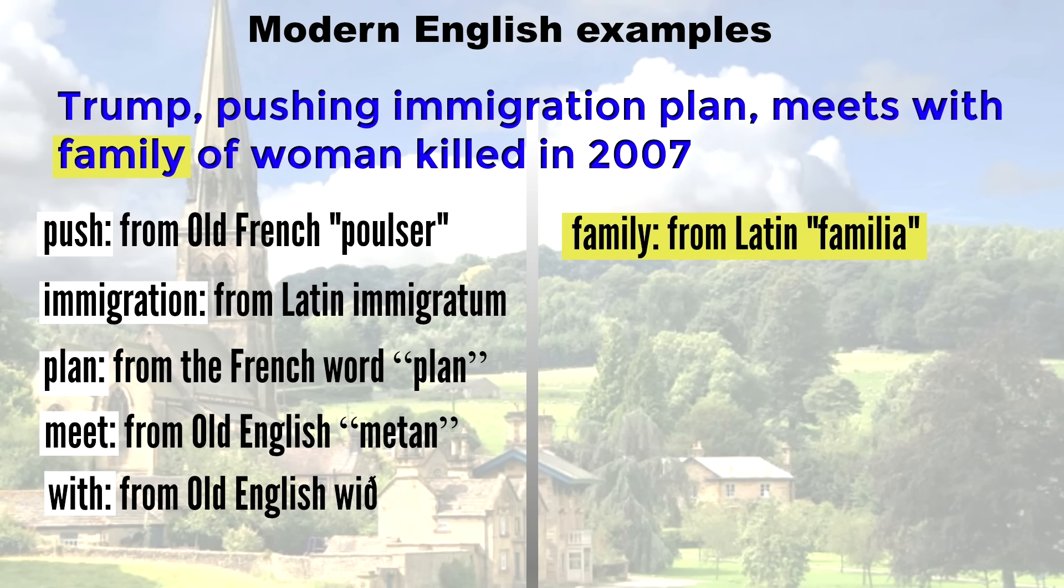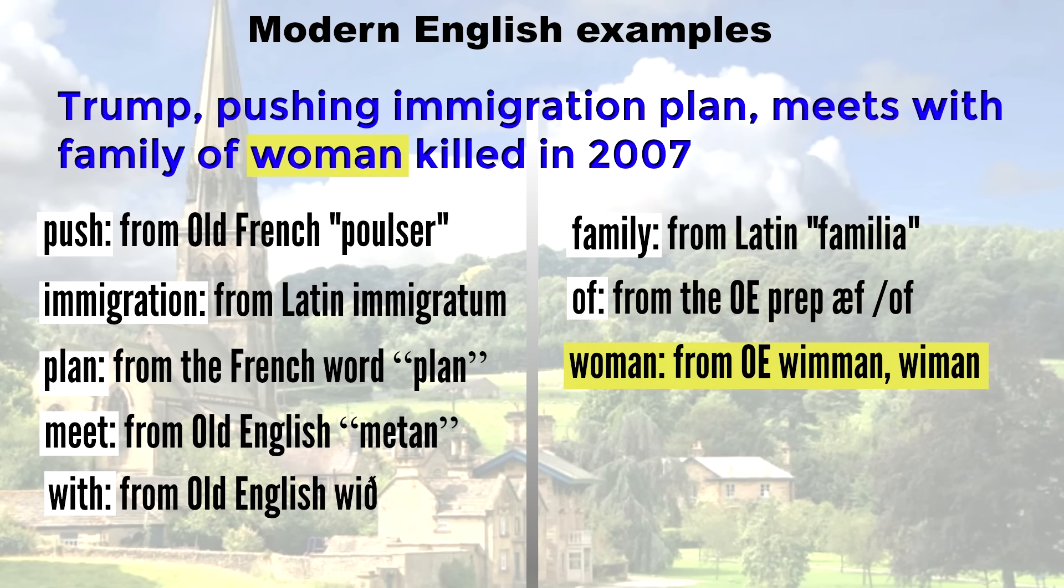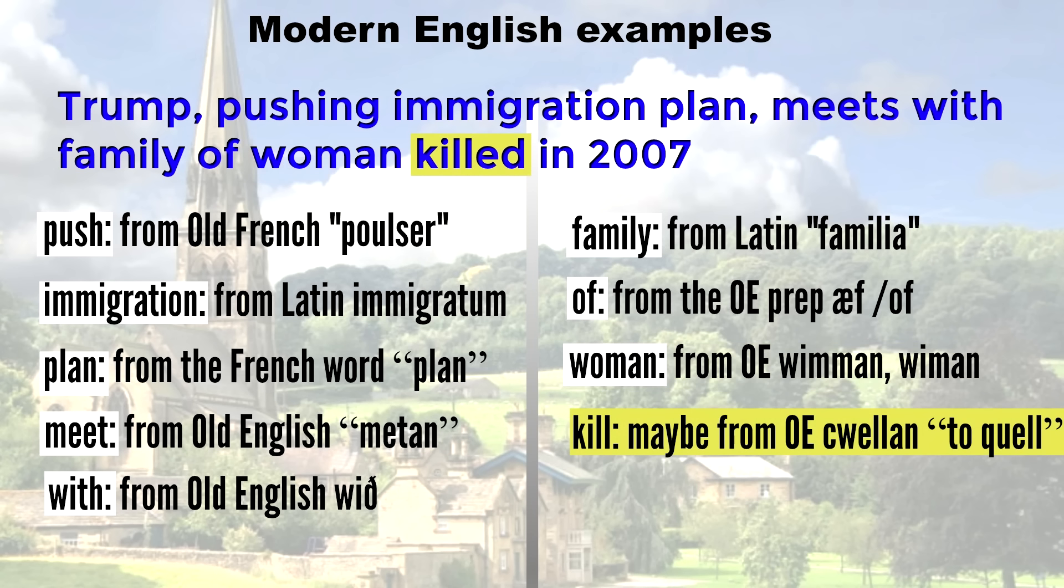Family. This comes from the Latin familia, according to the source I used. But there's also the French word famille, which I suppose could be the source. Of. This word comes from the Old English af, or off. Woman. This comes from Old English wimman, or wiman. Kill. This might come from the Old English quellan, to quell.